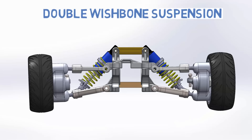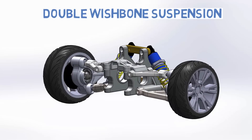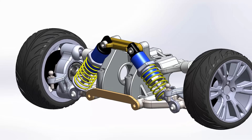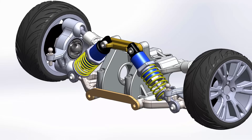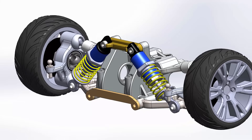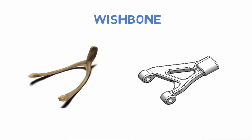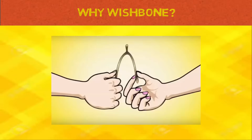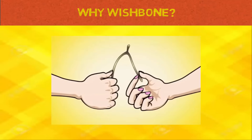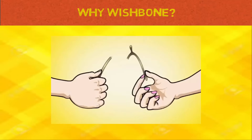A double wishbone suspension consists of two A-shaped arms. It replicates the design of a bird's wishbone — a wishbone would be snapped apart by two people while they were making a wish, and the person holding the longer piece was said to have good fortune or a wish granted.